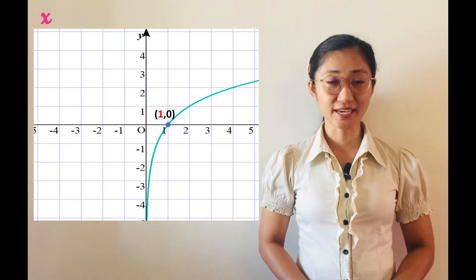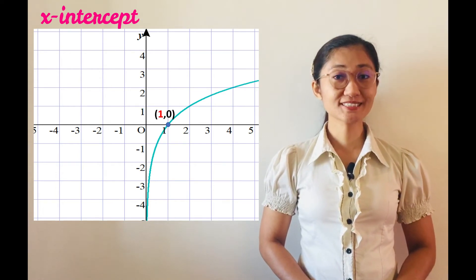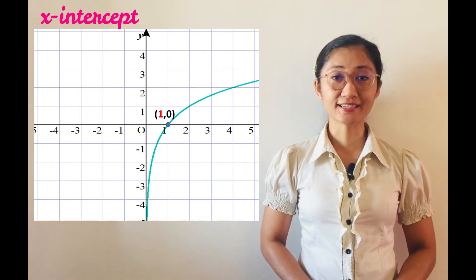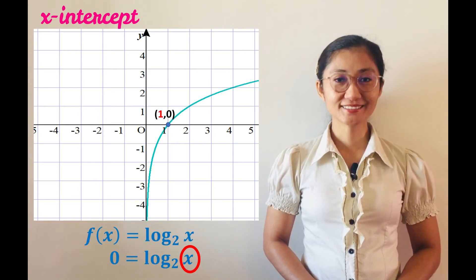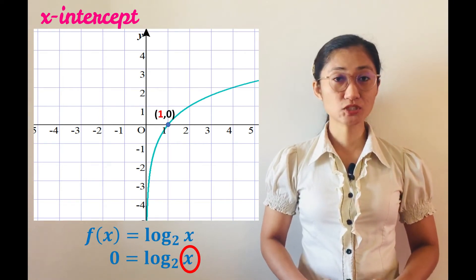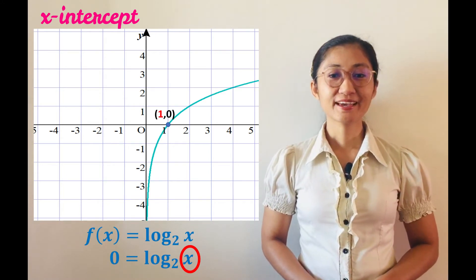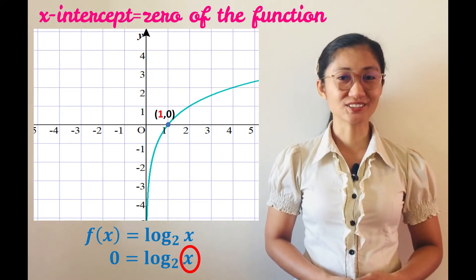Recall that an intercept is the value where the graph crosses an axis. If it is an x-intercept, then it is the x-value or abscissa of the point which touches the x-axis. Since the y-coordinate of the point containing the x-intercept is 0, given an equation, the x-intercept is found by substituting 0 to y and solving for the corresponding x. This x-intercept is also called the zero of the function.